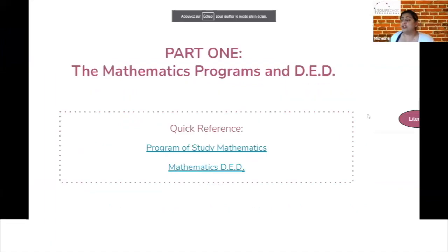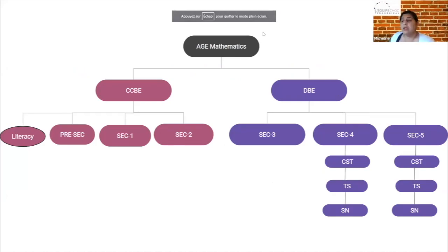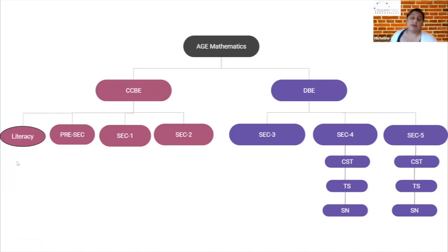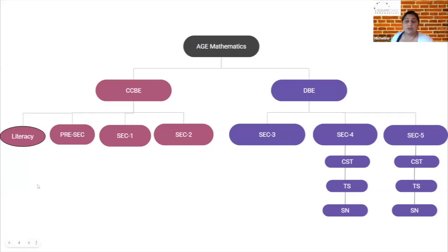For an overview, this is what the mathematics program looks like. We have a CCBE component and a DBE component. The CCBE component has a set of modules called "literacy" - I'm not sure why they called it literacy in the ministerial documents; it should be a combination of numeracy and literacy. We have pre-secondary math courses, Secondary 1 and Secondary 2, and in Secondary 1 and 2 there are multiple modules.